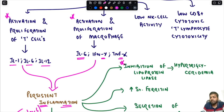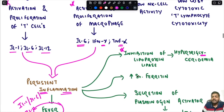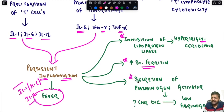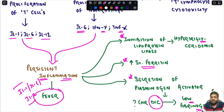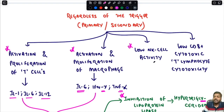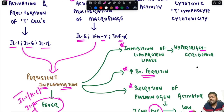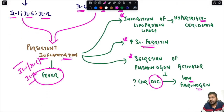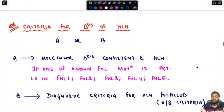Persistent inflammation leads to inhibition of lipoprotein lipase, causing hypertriglyceridemia. It also leads to very high levels of serum ferritin. Inflammation also leads to secretion of plasminogen activator, which may cause chronic DIC — activating the coagulation cascade, leading to consumptive coagulopathy and hypofibrinogenemia. Across all types of HLH there is also low NK cell activity and low CD8-positive cytotoxic T lymphocyte cytotoxicity.